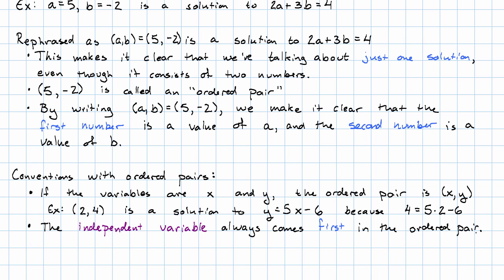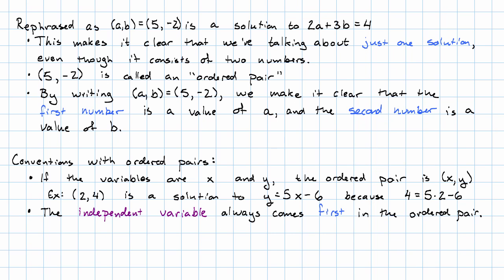The independent variable is always the first number in the ordered pair. That gives us two pieces of information.